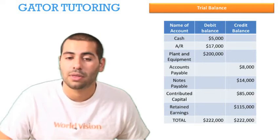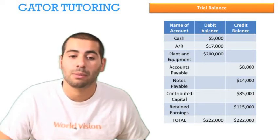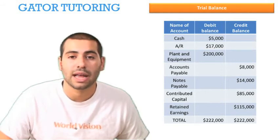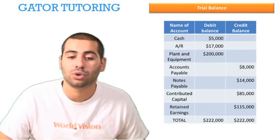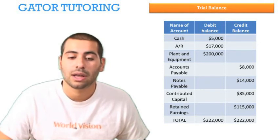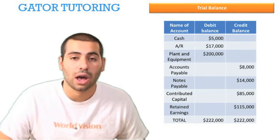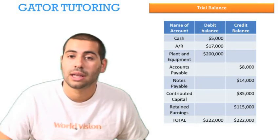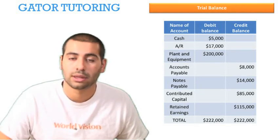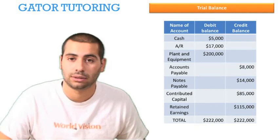When you add up the credit balances of accounts payable, notes payable, contributed capital, and retained earnings, you're going to end up with a credit balance of $222,000. That means that our debits and credits equal each other and our accounting equation is correct, and the trial balance balances.